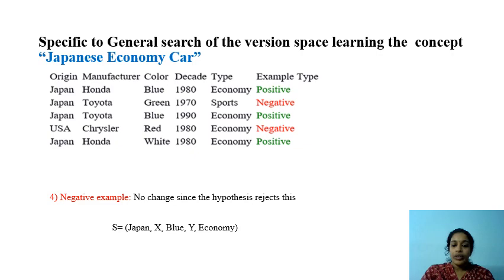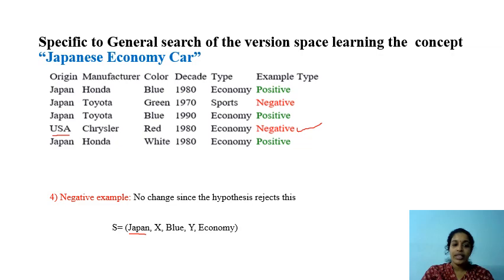Now we got a negative instance and we check whether our hypothesis rejects it. Our hypothesis clearly rejects this negative example, since our hypothesis accepts Japan but the value given here is USA. So no change is required in this current hypothesis.